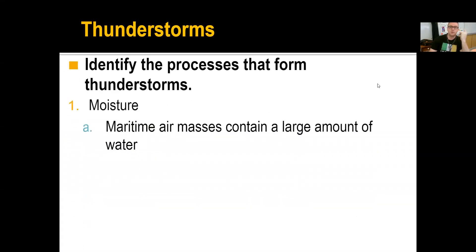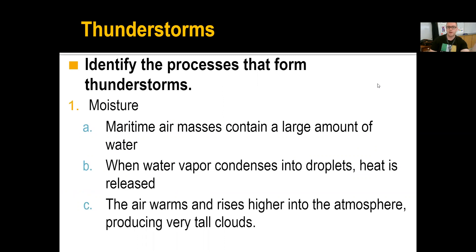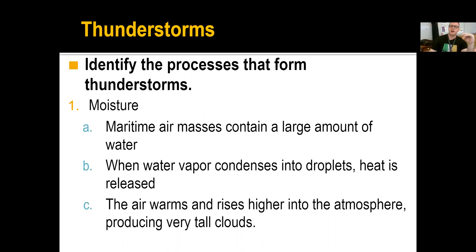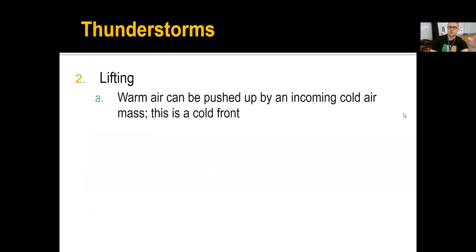How do we get thunderstorms? The first thing we need is moisture. We have these maritime air masses — large areas of water. Maritime just means ocean, and there are polar maritime and tropical air masses. You need moisture in the air. When that water vapor condenses into droplets, we're releasing heat. So condensation is a heat reaction. When forming clouds up in the atmosphere, the air cools the water vapor into droplets — it condenses, heat is released, warm air continues to rise higher and higher, producing very tall clouds. Moisture is very key.